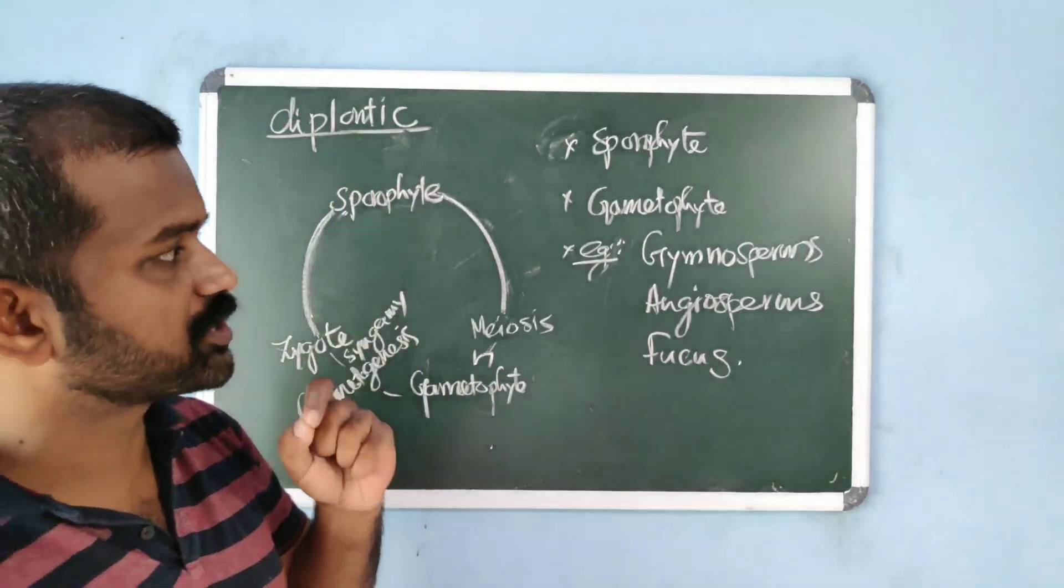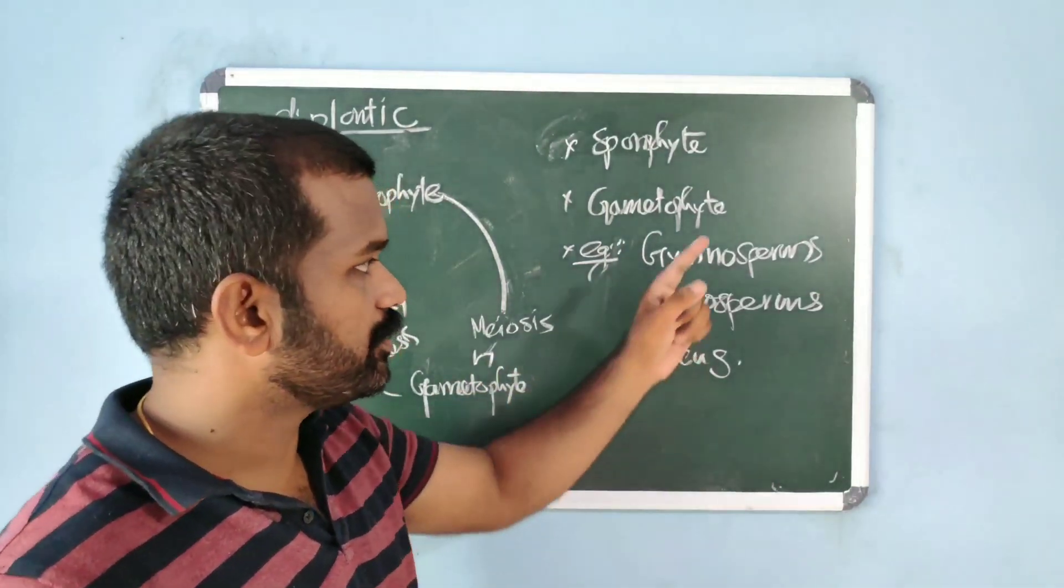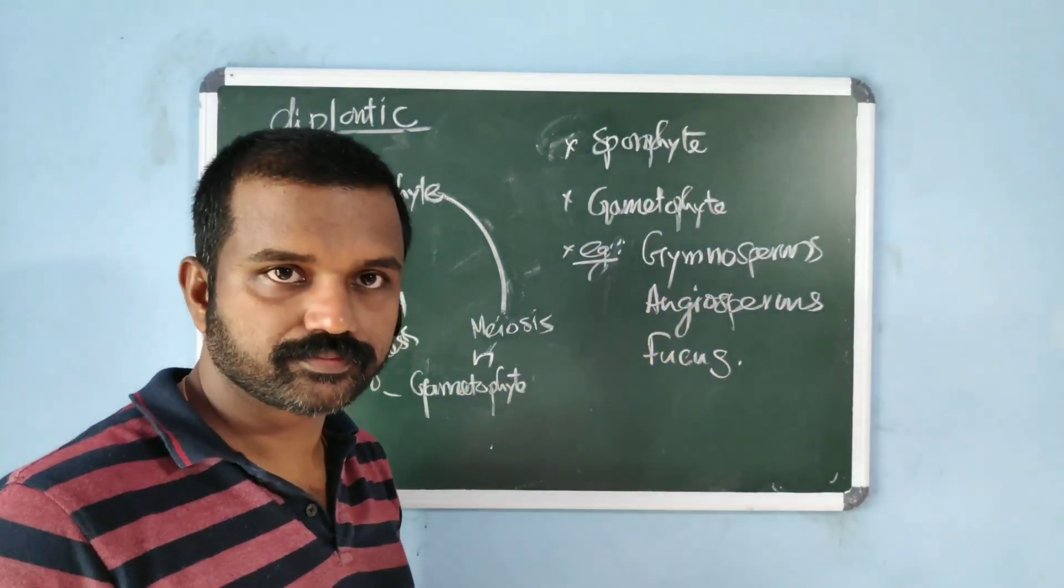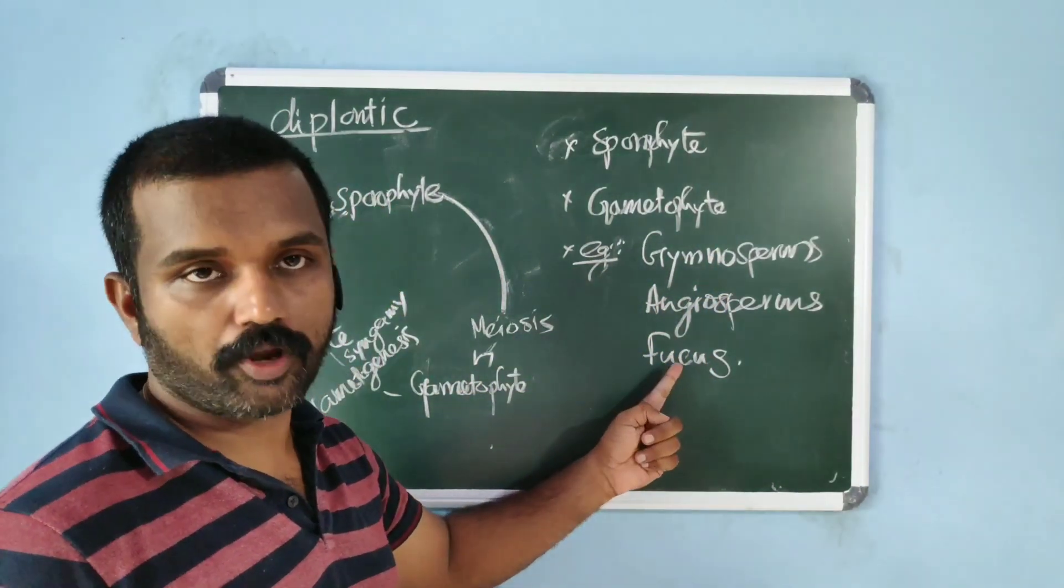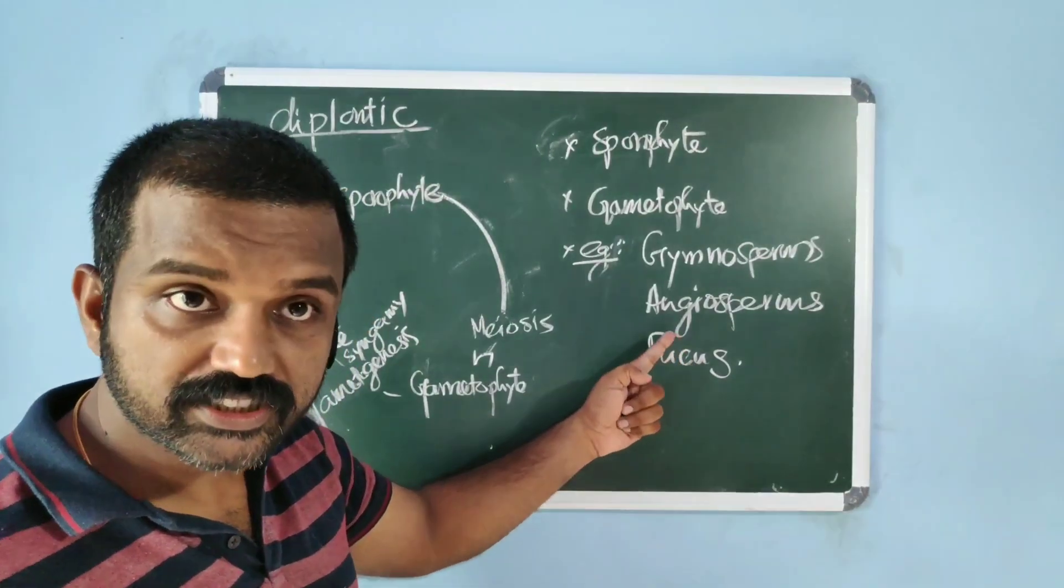Diplontic life cycle is exhibited by higher plants like gymnosperms and angiosperms. An algae that shows diplontic life cycle, example is Fucus.